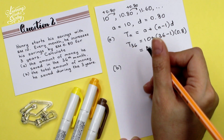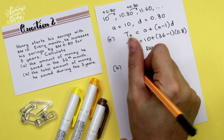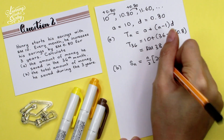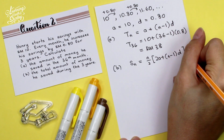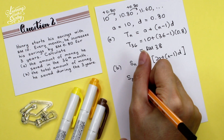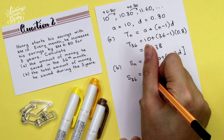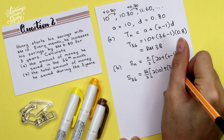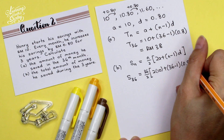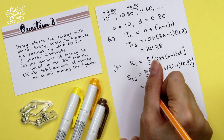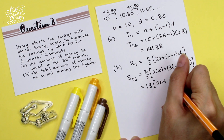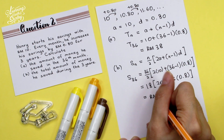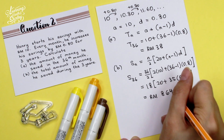For part B, to calculate the total amount of money he saved during the 3 years, we use the SN formula: SN = N/2 × (2A + (N − 1)D). To find S36, we substitute: S36 = 36/2 × (2 × 10 + (36 − 1) × 0.8) = 18 × (20 + 35 × 0.8). Therefore, it equals RM864. So this is the answer.